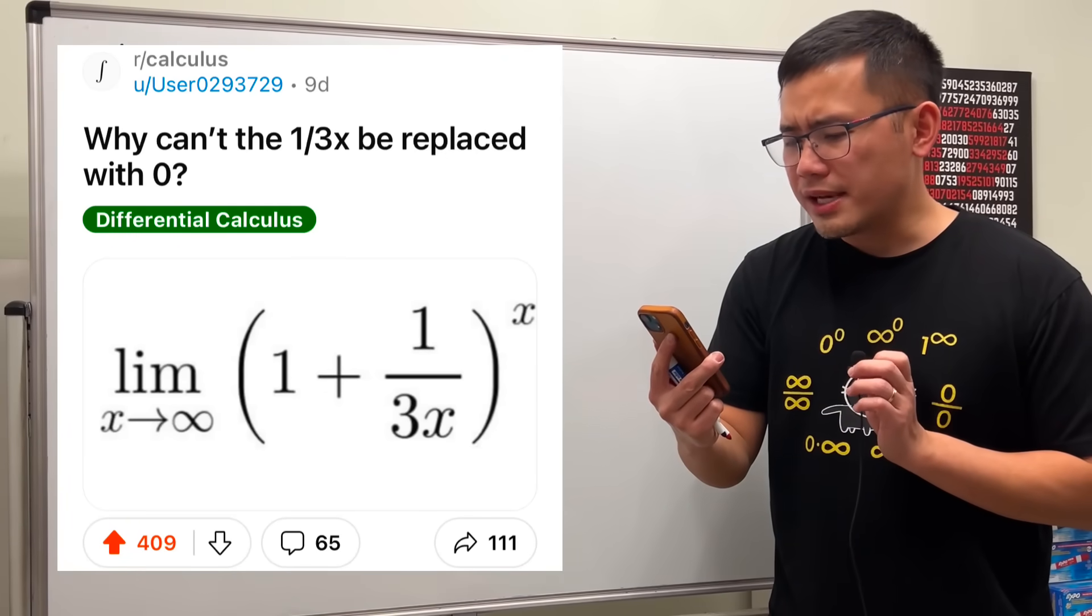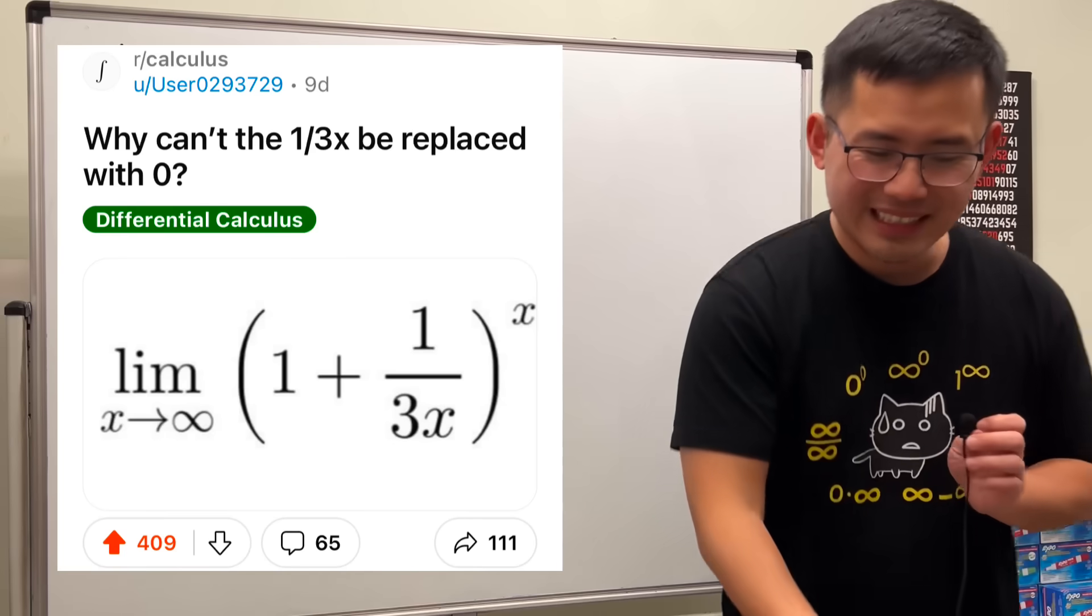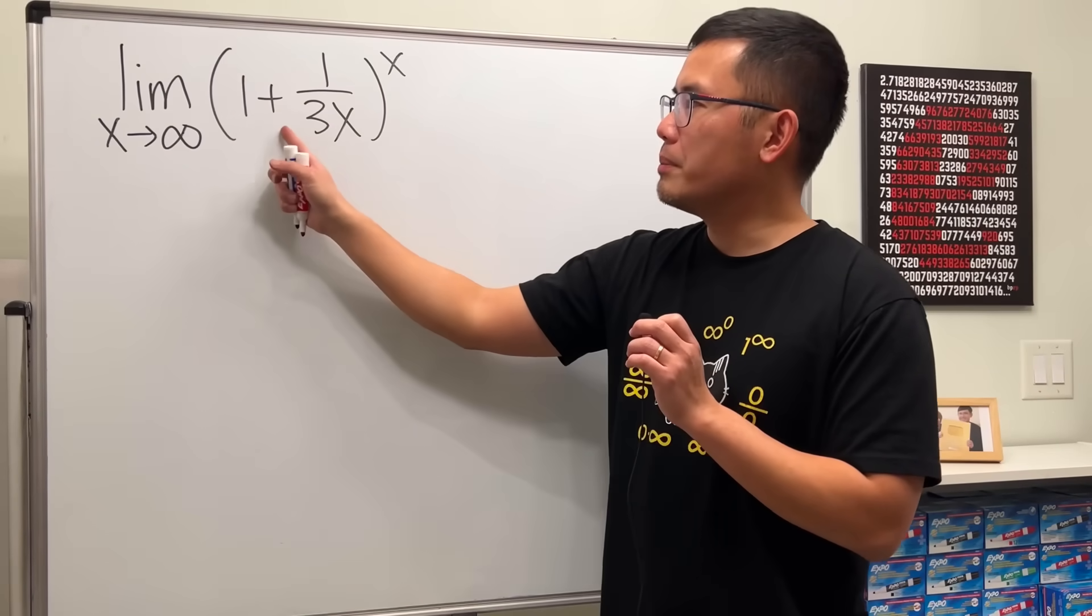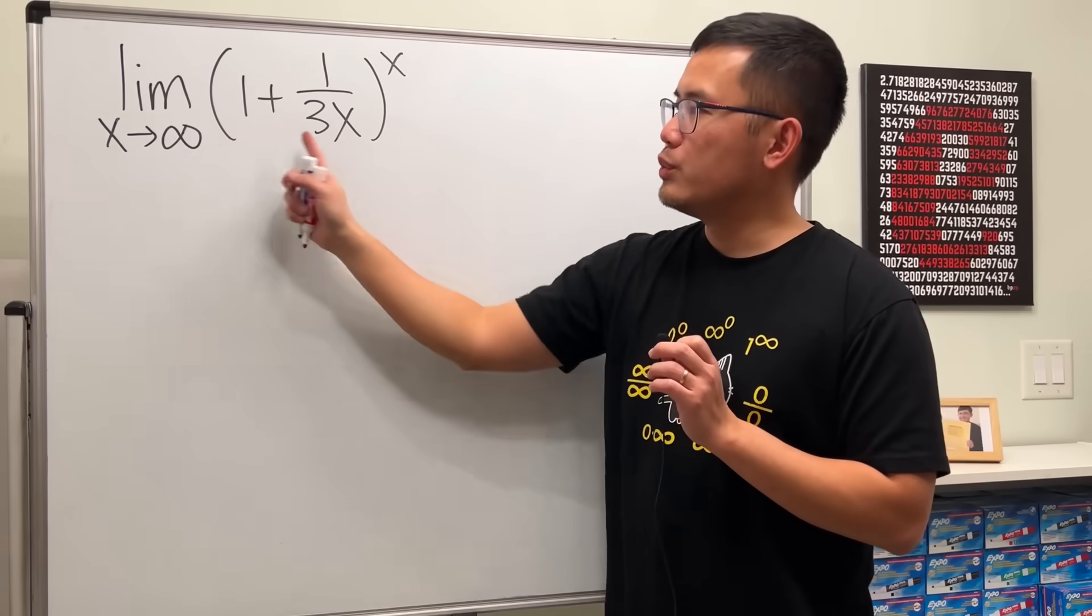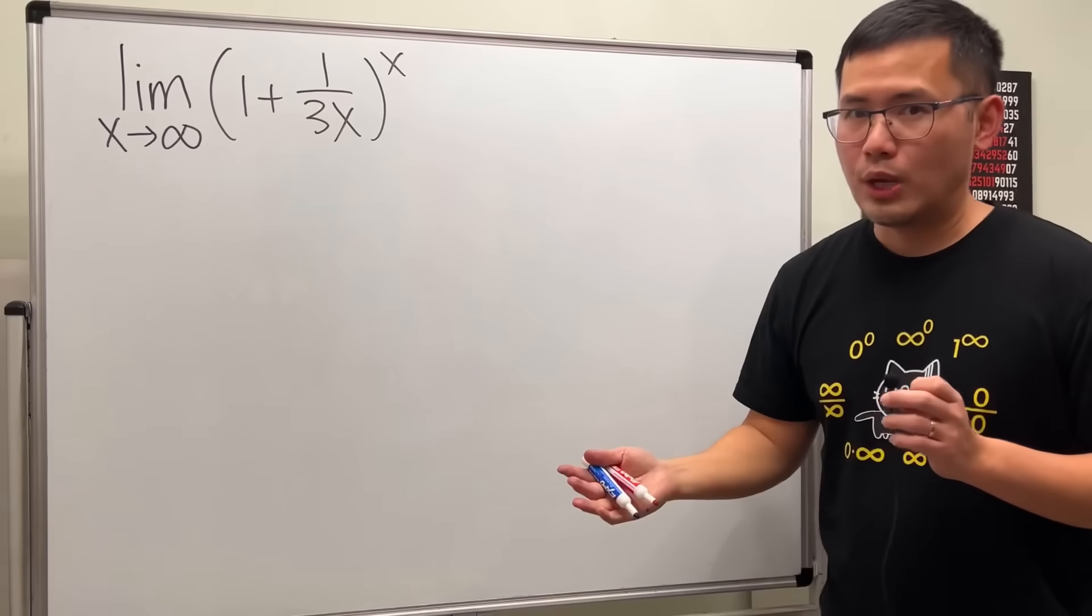Why can't the 1 over 3x be replaced with 0? Okay, let's have a look.